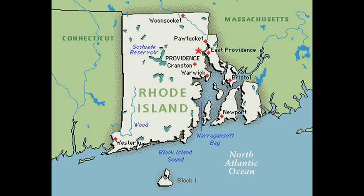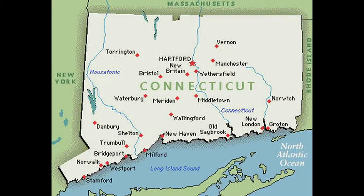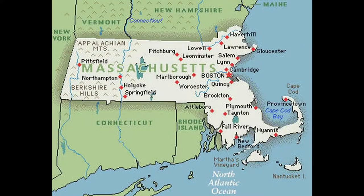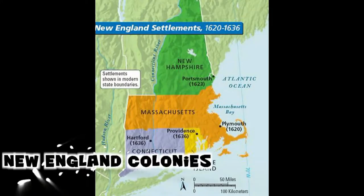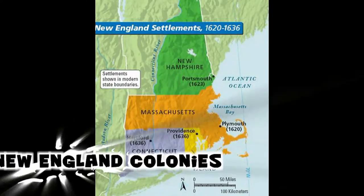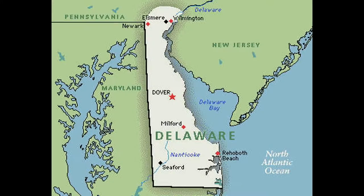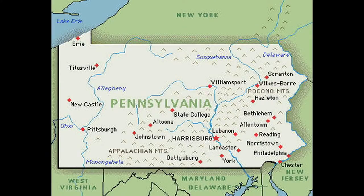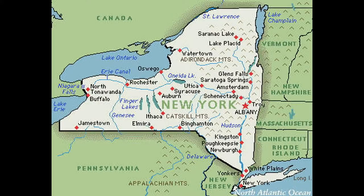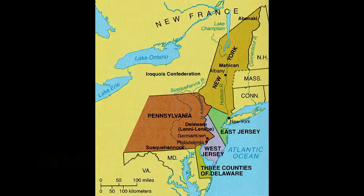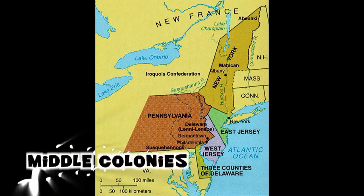Rhode Island, Connecticut, Massachusetts, and New Hampshire are part of the New England colonies. Delaware, Pennsylvania, New York, and New Jersey are part of the Middle colonies.